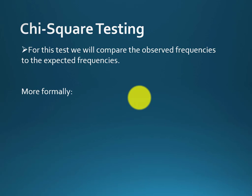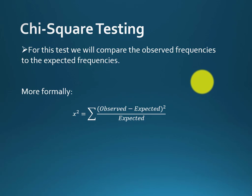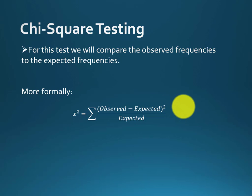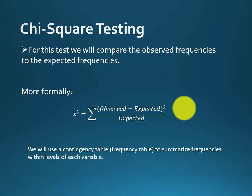Chi-square is used to find the relationship between two categorical types of data. For this test, we compare the observed frequency to the expected frequency. This is the general formula for calculating the chi-square value: observed frequency minus expected frequency, squared, divided by expected frequency — summed across all cell values.